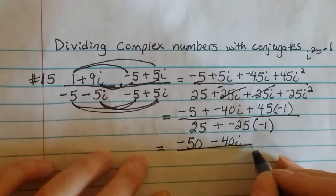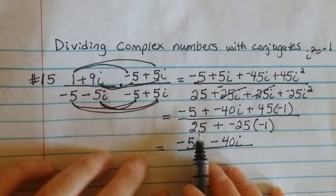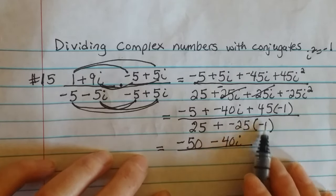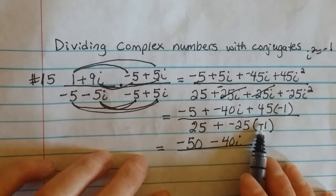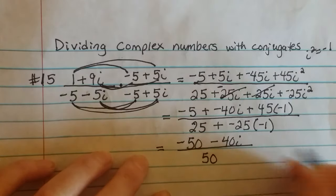Then I need to combine like terms on the bottom down here. So this would be a positive 25 plus another 25. That would be a positive 50.